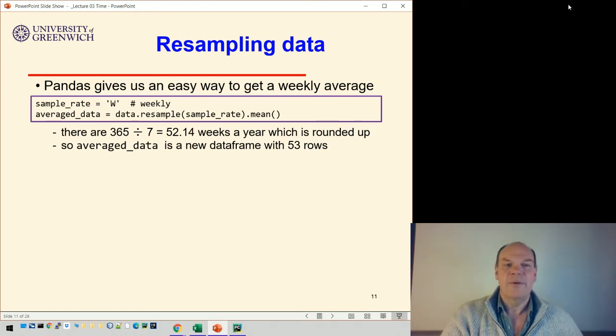Here's the code that does that. The sample rate is set to W, meaning weekly, and we can resample the data and save it to another dataframe by taking the average over every week. If you imagine there are 365 days a year, we divide that by seven days a week, which gives us 52.14 weeks a year that gets rounded up, so there's going to be 53 rows in our dataframe.